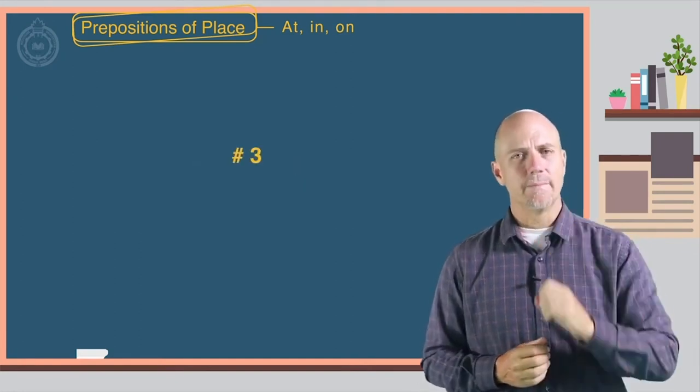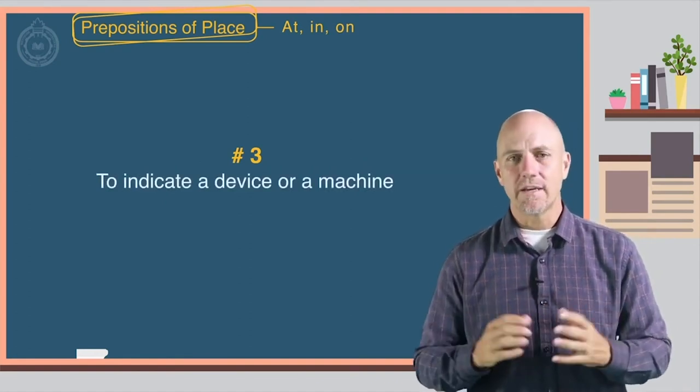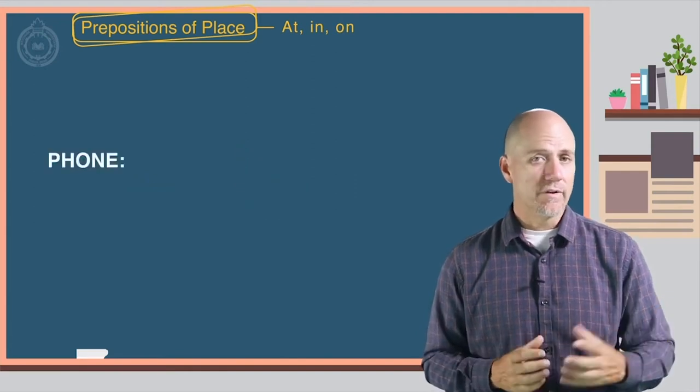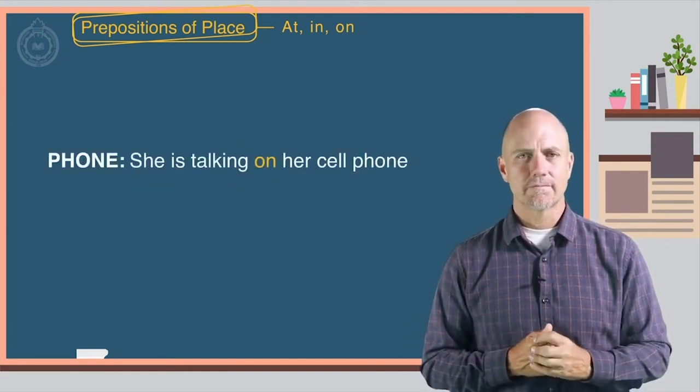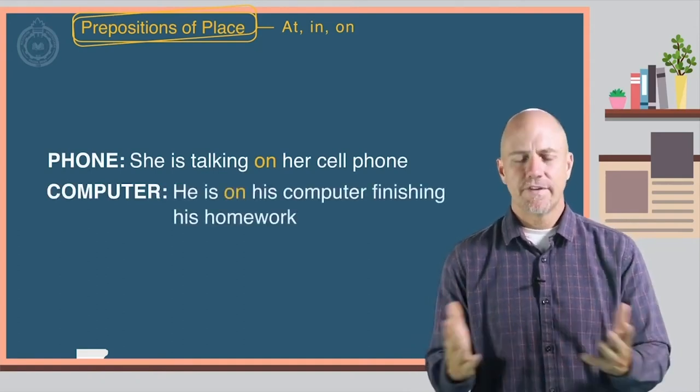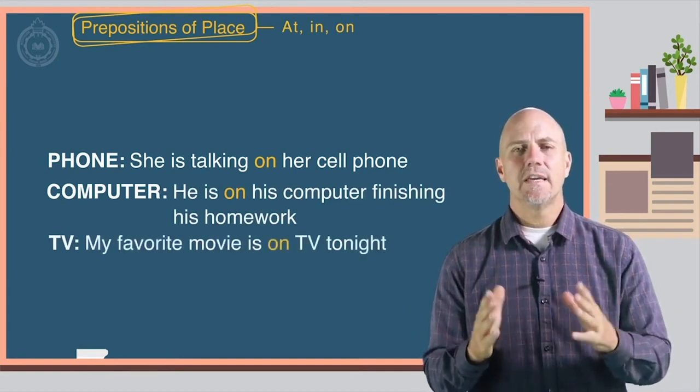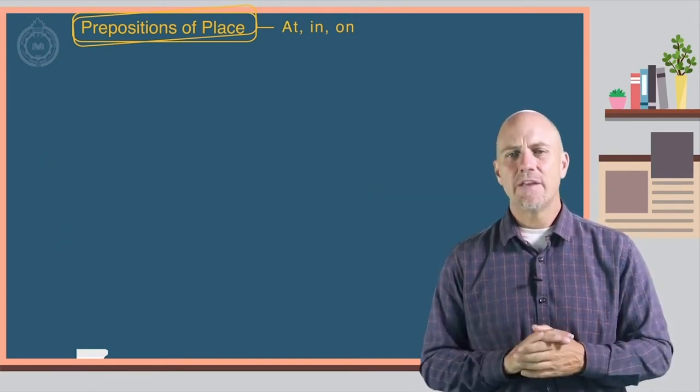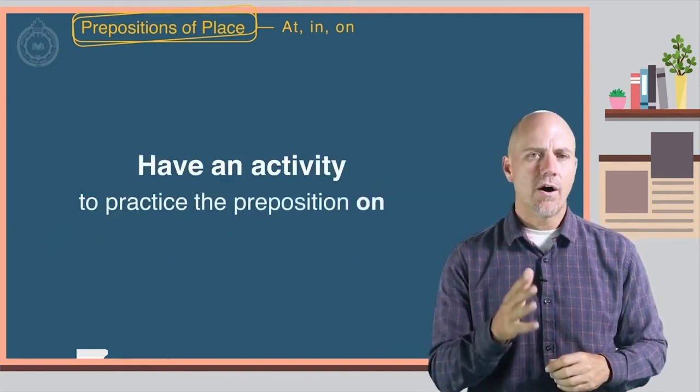Number three: to indicate a device or a machine. Here are some examples. A phone: She is talking on her cell phone. A computer: He is on his computer finishing his homework. TV: My favorite movie is on TV tonight. The video will now stop and you will have an activity to practice the preposition on.